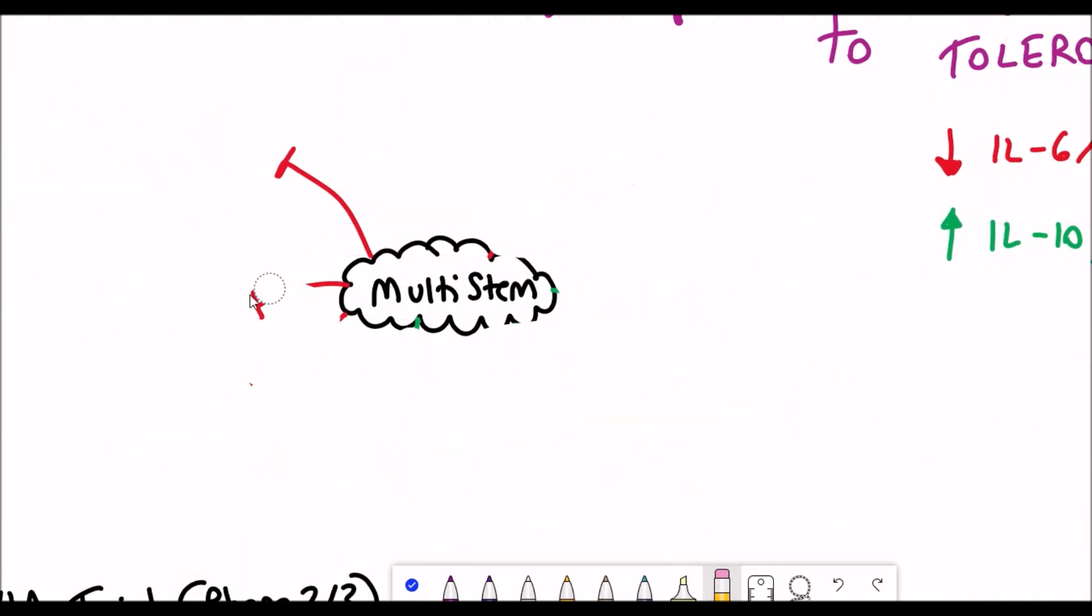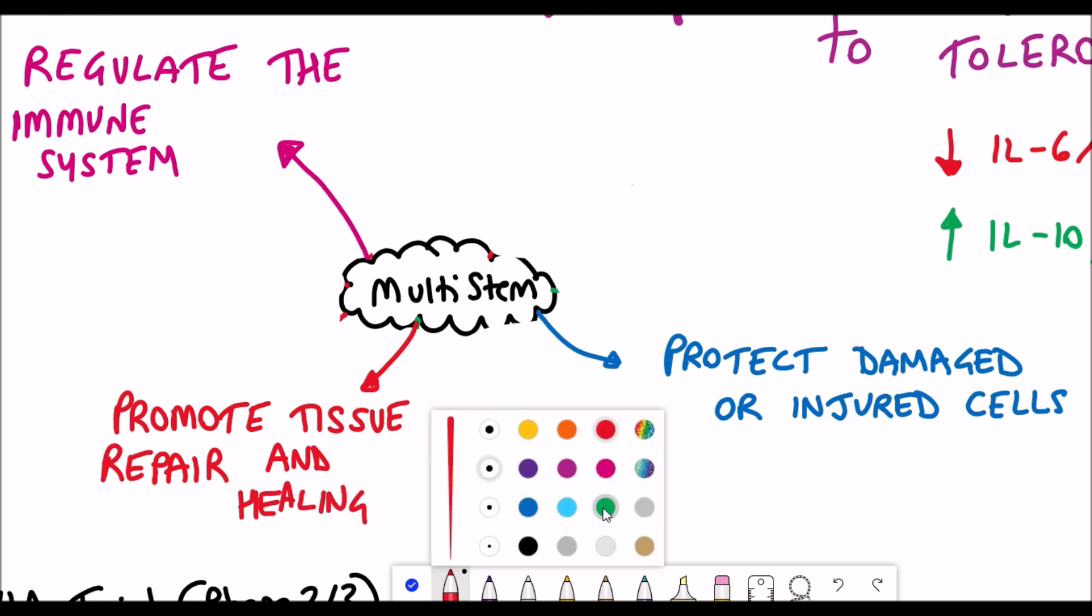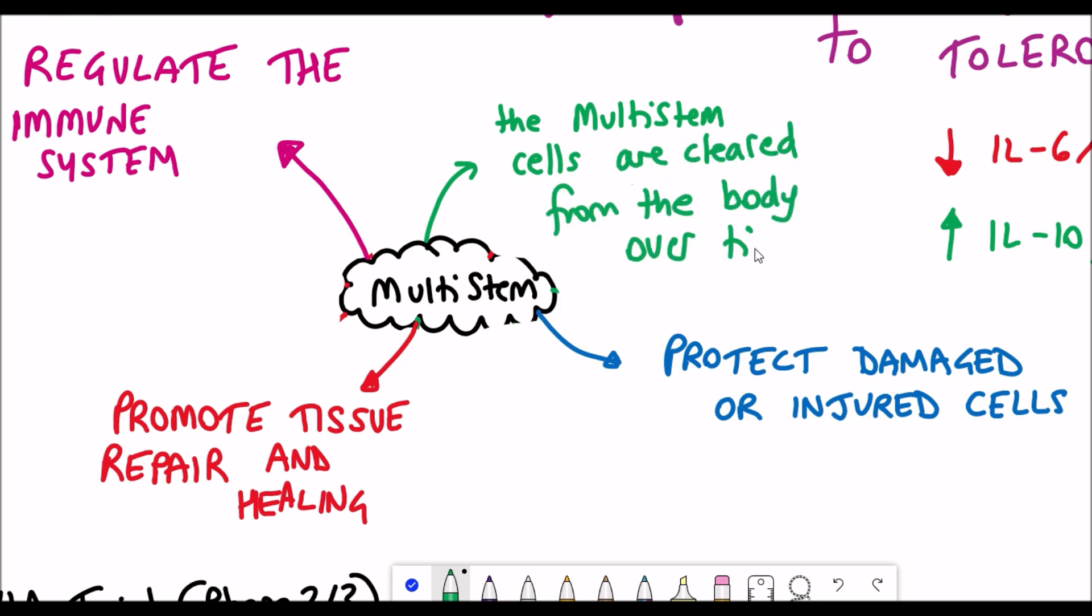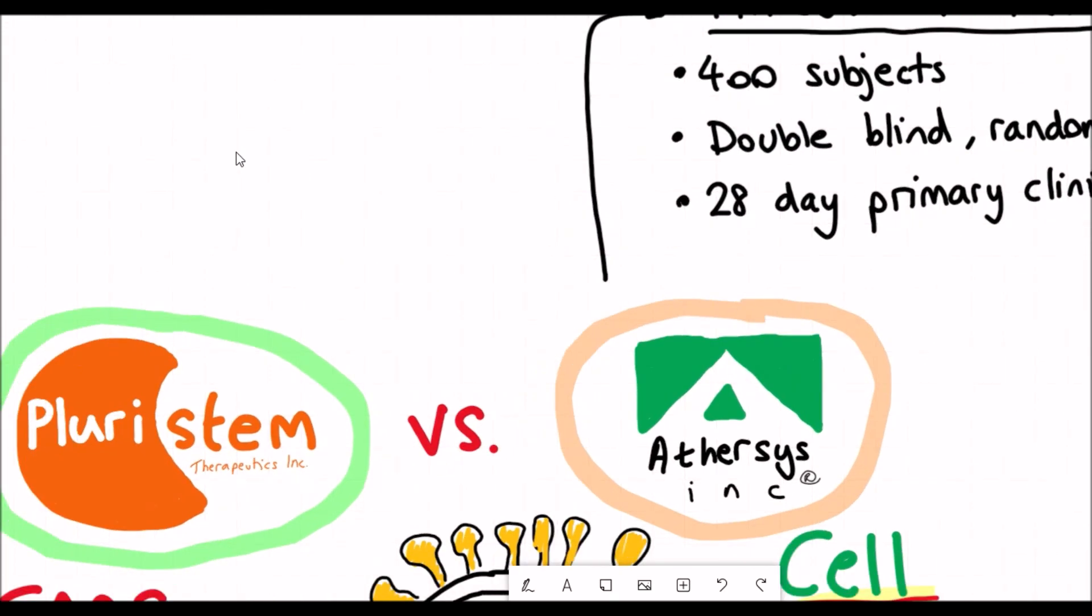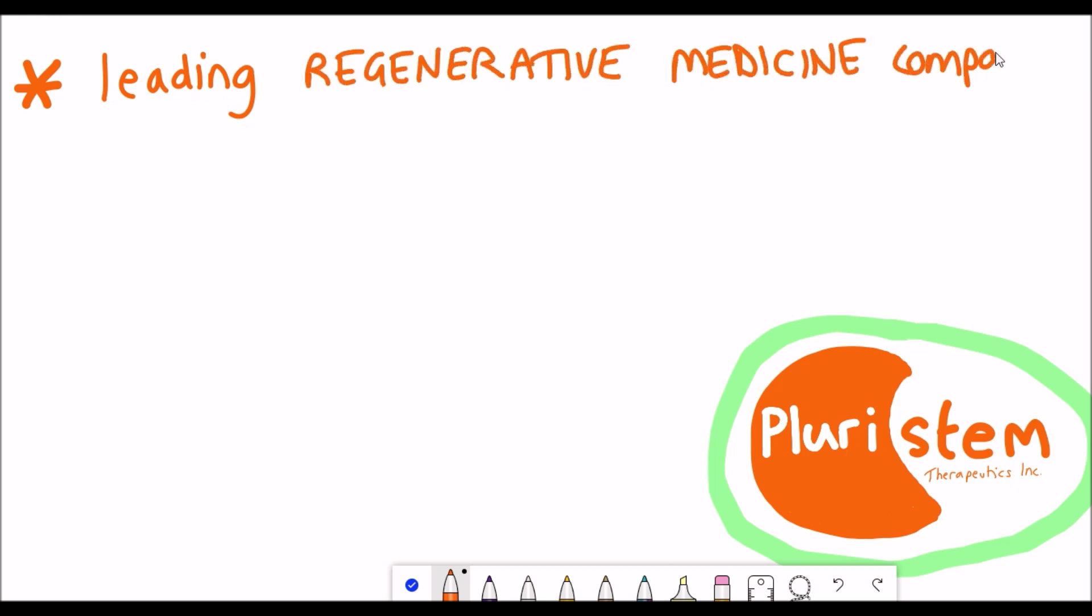The key point is that these Multistem cells secrete factors into the surrounding tissue and into the blood system. These different factors hopefully have the potential to regulate the immune system, protect damaged and injured cells, and promote tissue repair and healing. After this happens over time, these cells are cleared from the body. What makes these cell therapies different from taking drugs is they're secreting a whole bunch of factors that could have a diverse and even more effective response than just taking one compound.